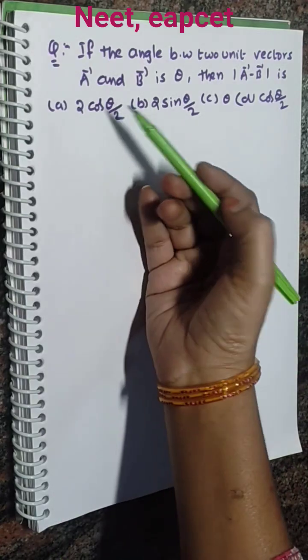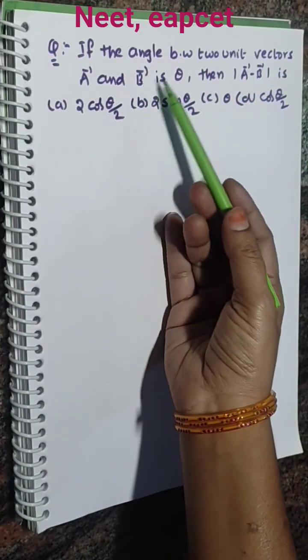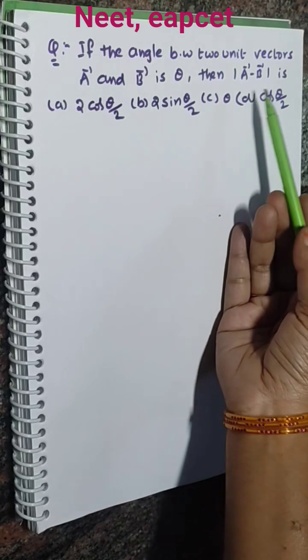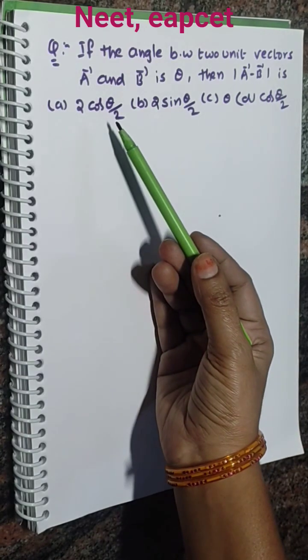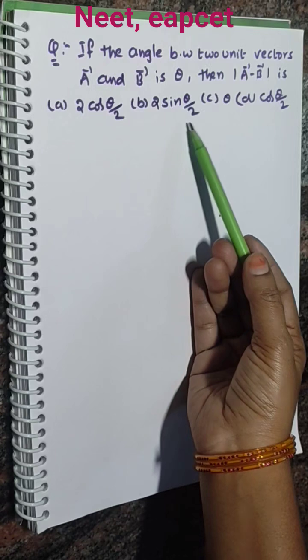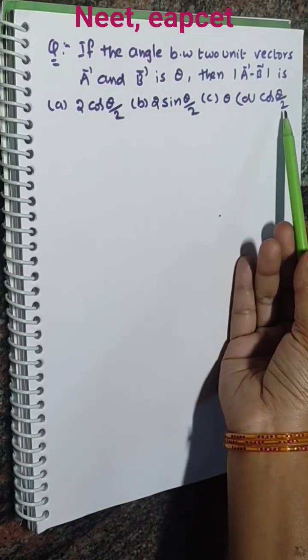See the question: if the angle between two unit vectors A and B is theta, then modulus of A minus B is? See the options: (a) 2 cos theta by 2, (b) 2 sin theta by 2, (c) cos theta by 2.